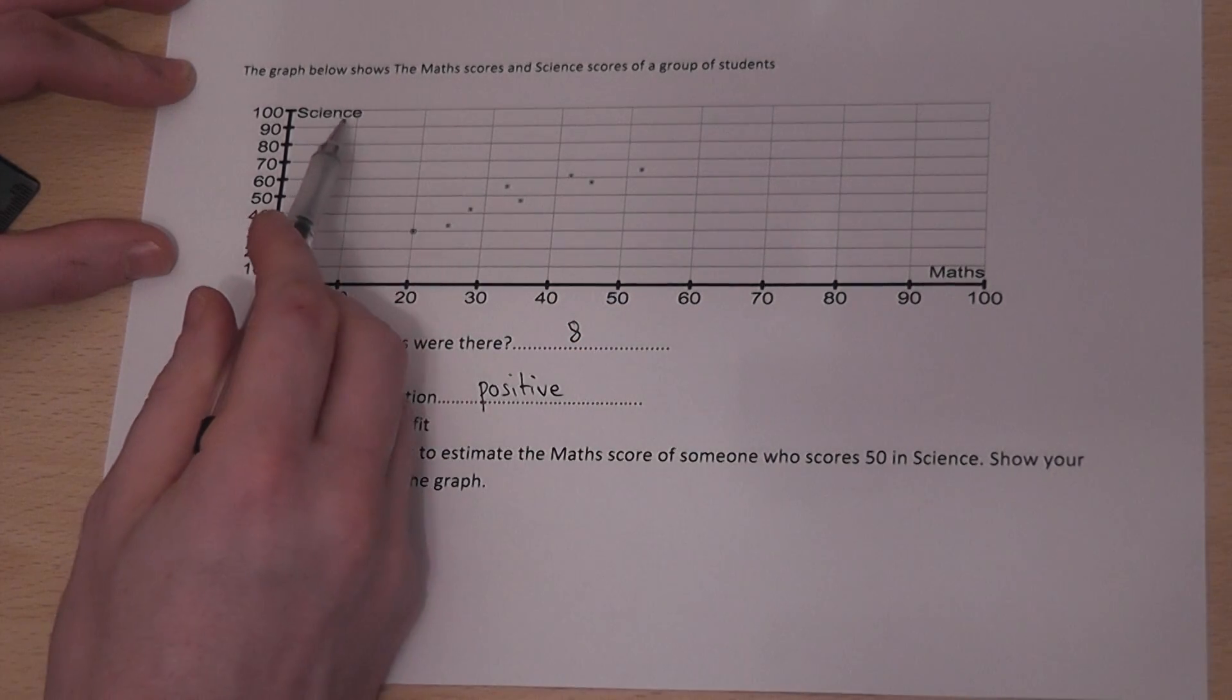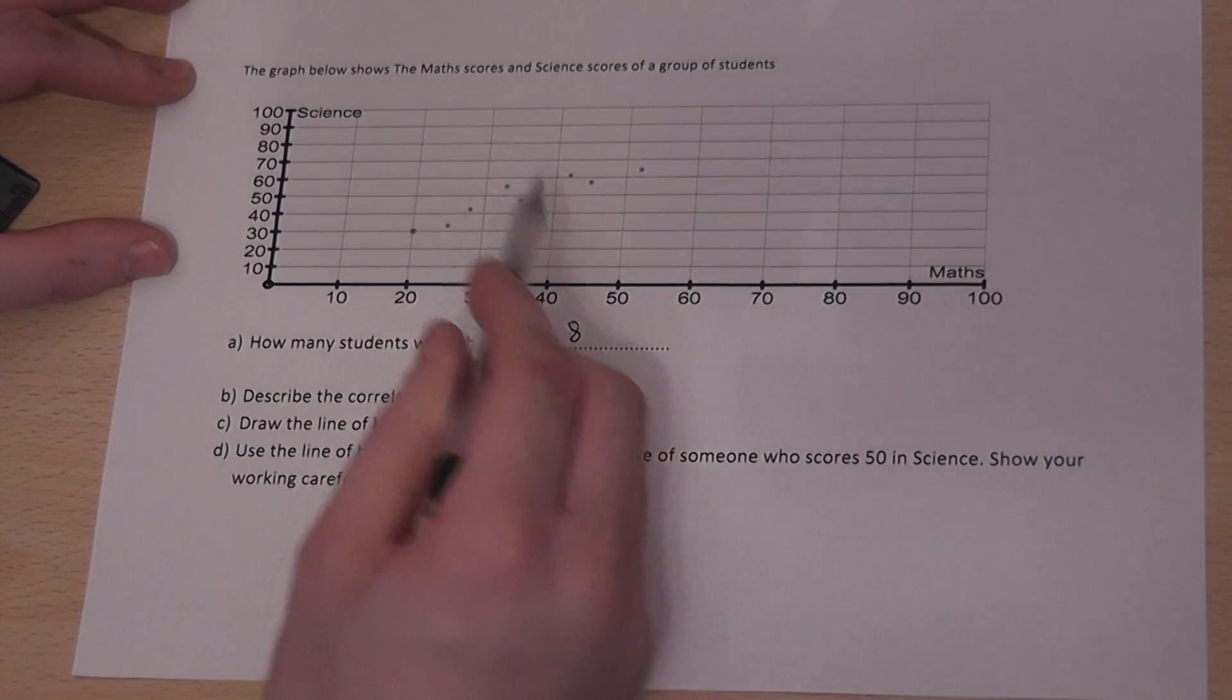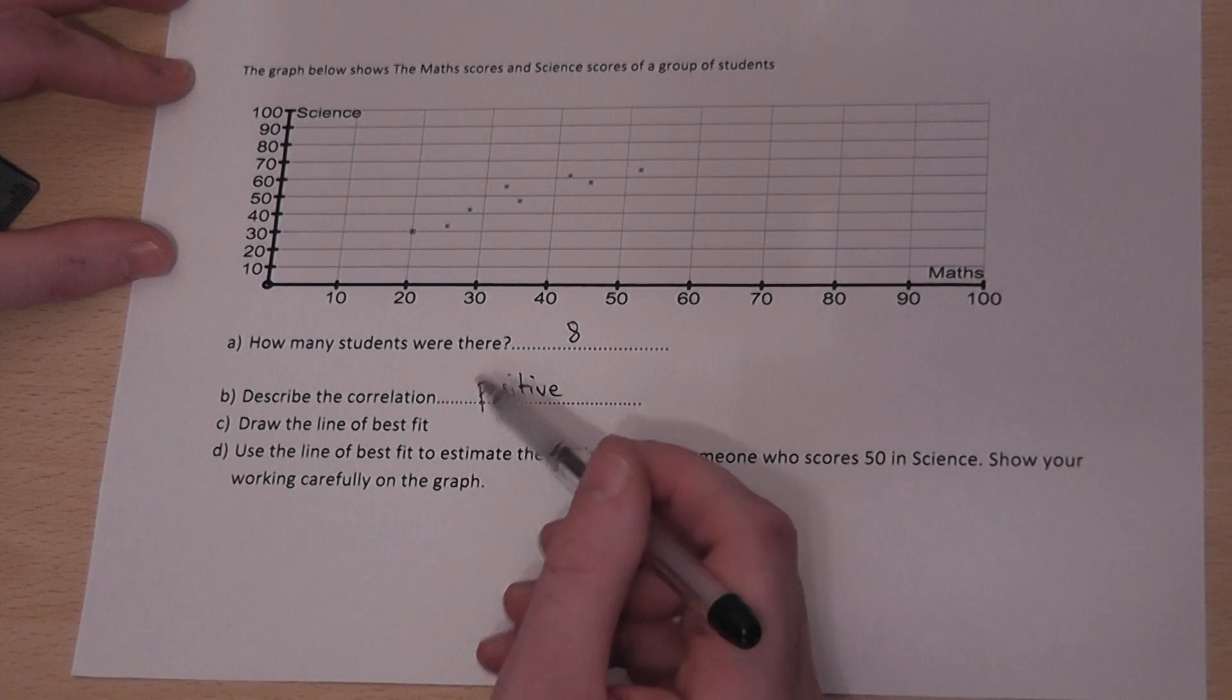If the graph went down, that would be called negative. If the dots were all over the place, that would be classed as no correlation.